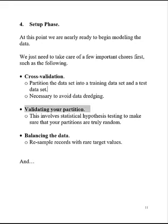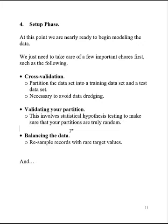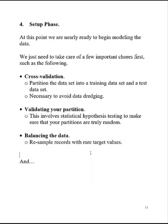Next we need to validate the partition that we made, and this involves statistical hypothesis testing to make sure your partitions are truly random. And balancing the data if needed — that means you can resample records with rare target values. I have a complex relationship with this idea of balancing the data; we'll talk more about that later.